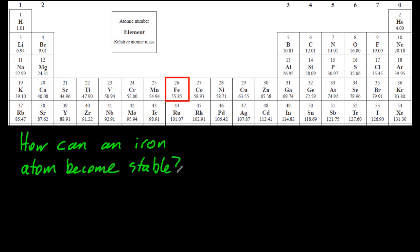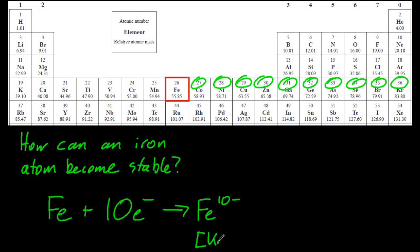So what ions can iron make? Well, following the rules up till now, you could add a whole bunch of electrons, 10 of them, and then it will be isoelectronic to krypton. Oh, now there's a problem there.